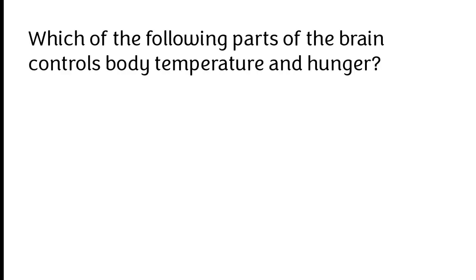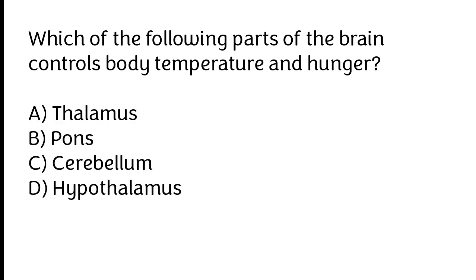Which of the following parts of the brain controls body temperature and hunger? Thalamus, Pons, Cerebellum, Hypothalamus. The correct answer is Option D. Hypothalamus is the part of the brain which controls body temperature and hunger.